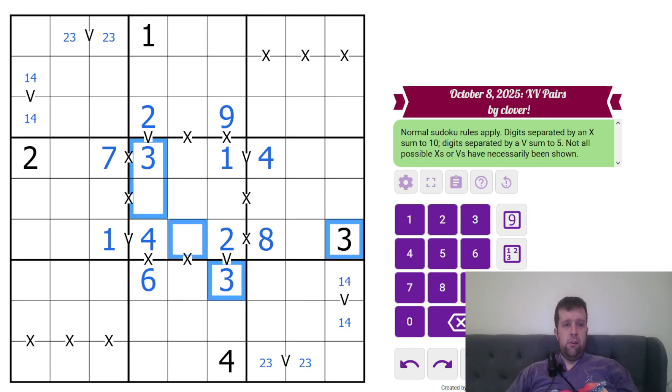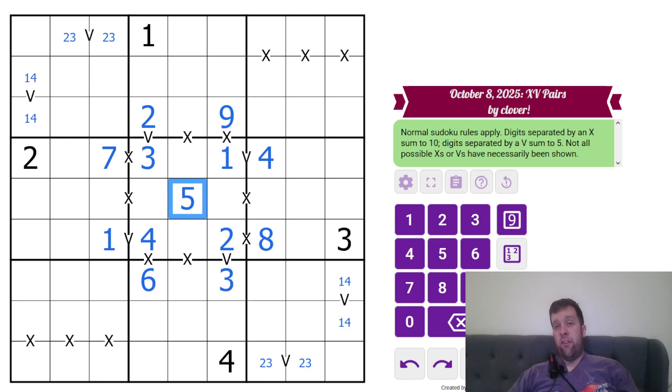This has to be, wait, this has to be six, seven, eight, and nine. This has to be five because five cannot have another five connected by a 10. Now, all of these digits are six, seven, eight, and nine, and we can clean them up a touch. Six, six, nine, seven, and eight.